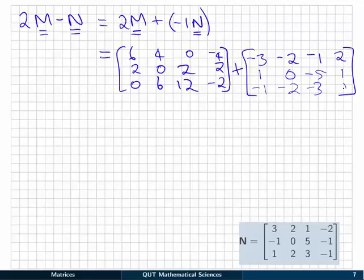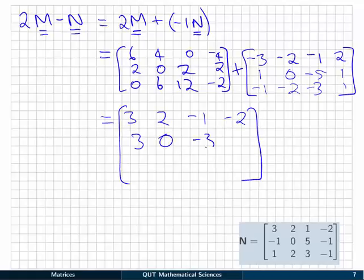And the last step is just to add all of those together. So we have 6 plus minus 3 is 3. 4 plus minus 2 is 2. 0 plus minus 1 is minus 1. Minus 4 plus 2 is minus 2. And so on. So 2 plus 1 is 3, 0, minus 3, 3, minus 1, 4, 9, and minus 1. So that's our result for 2M minus N. Again, it's the same dimension as all of the matrices we started with.